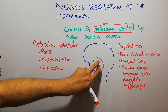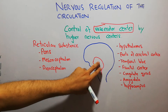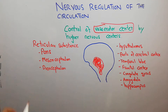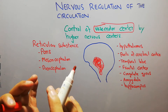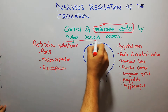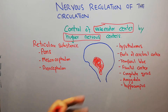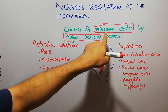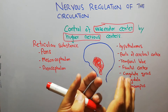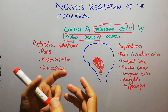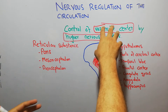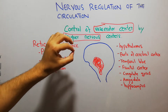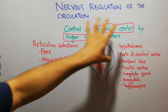The vasomotor center is basically present at the level of medulla and pons. However, this vasomotor center is also influenced by higher nervous centers. The vasomotor center controls the tone of the blood vessels and the heart rate, while these higher nervous centers control the activity of the vasomotor center itself.